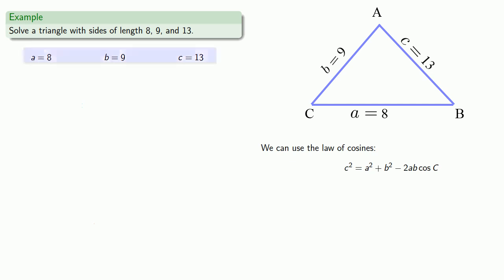So we have A equals 8, B equals 9, and C equals 13. We can use the law of cosines. Substituting those values in, then solving for C gives us the measure of angle C is approximately 103.2480 degrees.